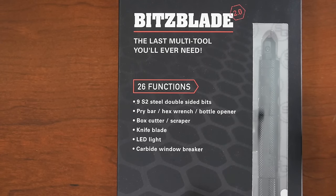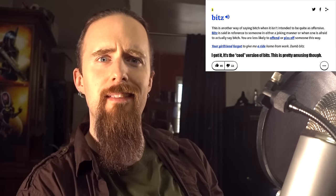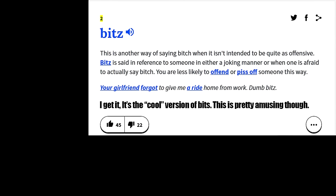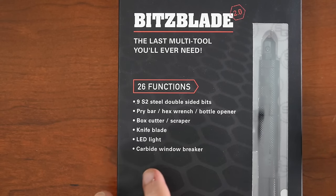So StatGearTools sent me the Bitsblade. Every time I see it, I want to say Blitzblade, my brain automatically fills in the L. And when I looked it up in a dictionary, that didn't really help. And it's got 26 functions, as it says.